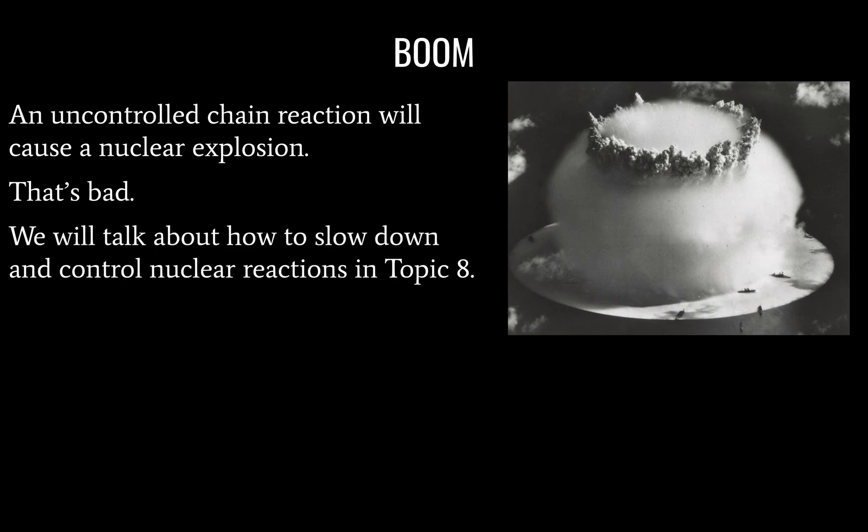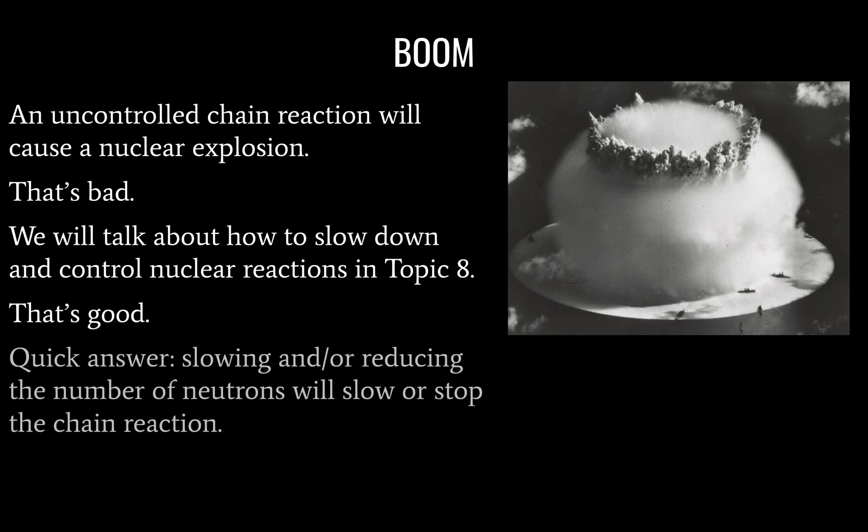So in topic 8, we're going to talk about how to control nuclear reactions, slowing them down. And that's good. I'm stealing a Simpsons joke. The quick answer here, without going over topic 8, is just to know that slowing down or reducing the number of neutrons is going to slow or stop the chain reaction entirely. And so that generally involves graphite control rods in a fission reactor.